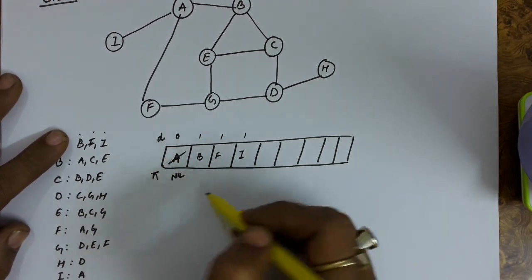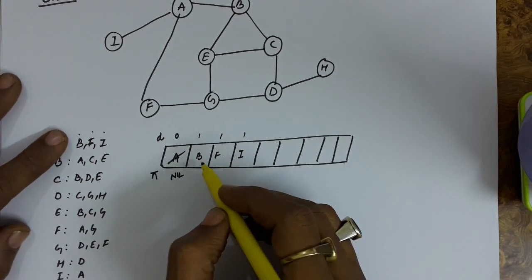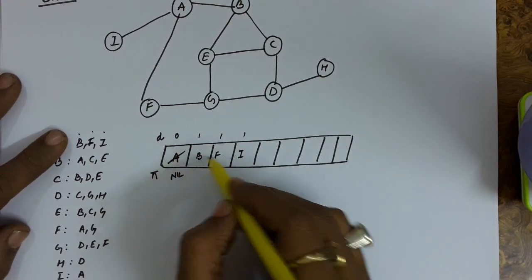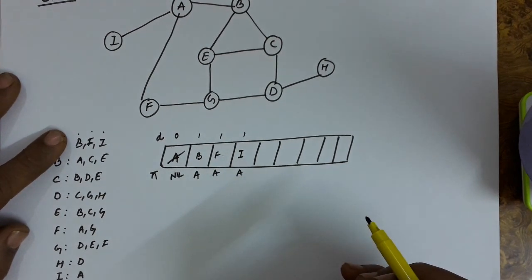Before that set the distance of B, F and I one more than the distance of A. So A had a distance zero. So the distance of B, F and I is set as one. Since B, F and I have got explored from A so the predecessor of these vertices will be set as A.